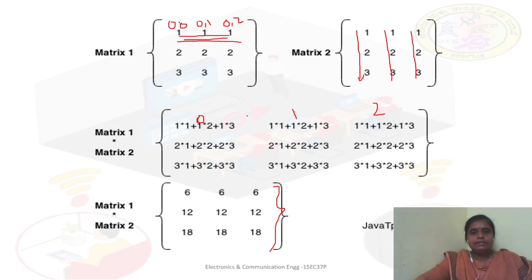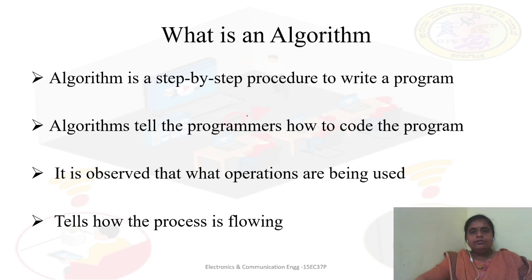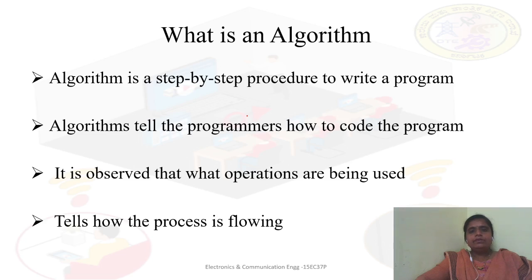After understanding how we go for the multiplication, we will go through the algorithm of the program. As you know, an algorithm is a step-by-step procedure to write a program. It helps explain how the code is written and how the operations go through. The algorithm is independent of the language you use — you can use the same algorithm for any coding system.